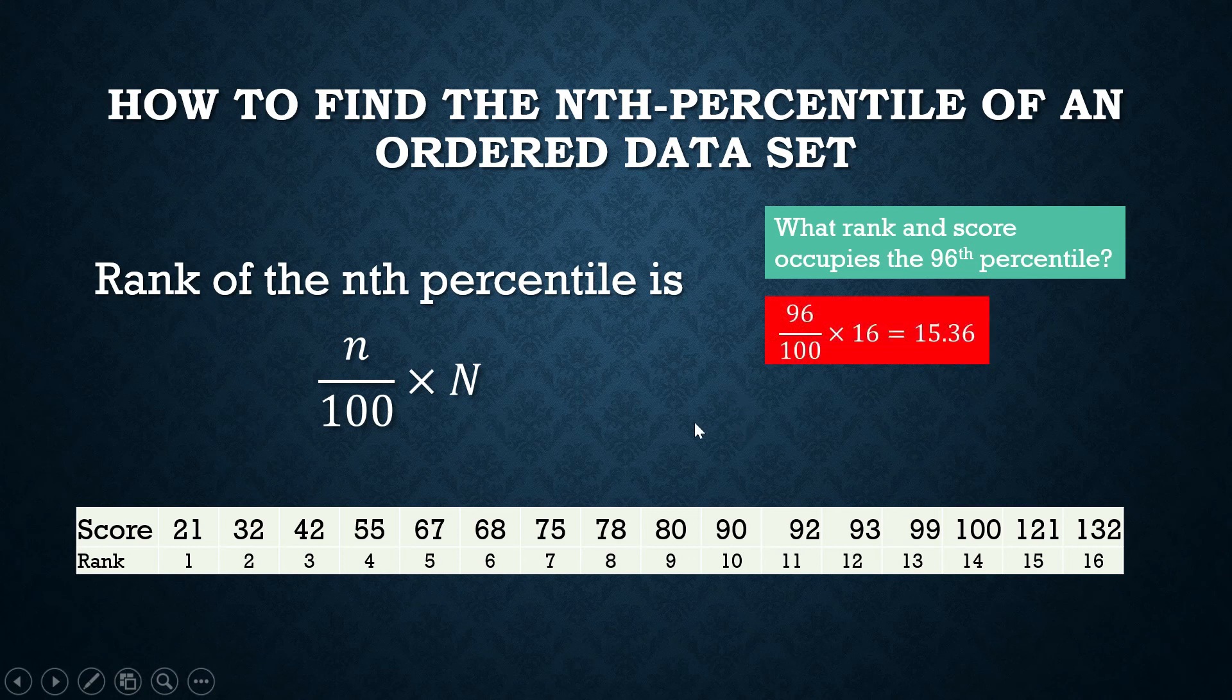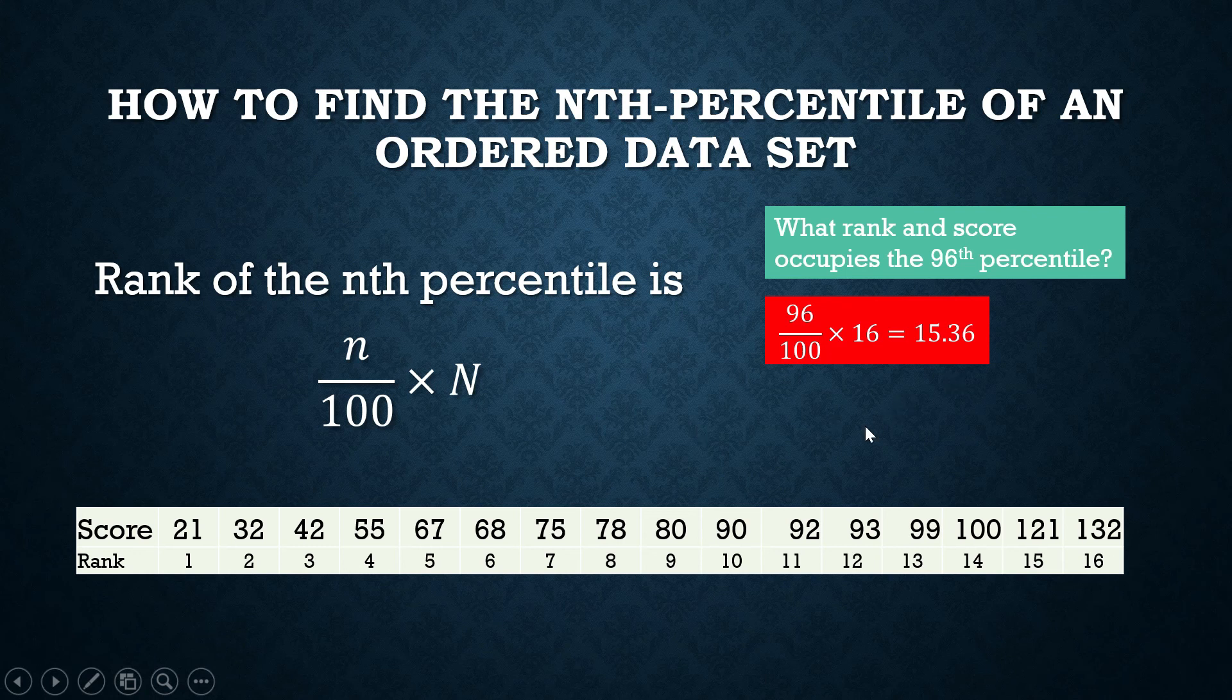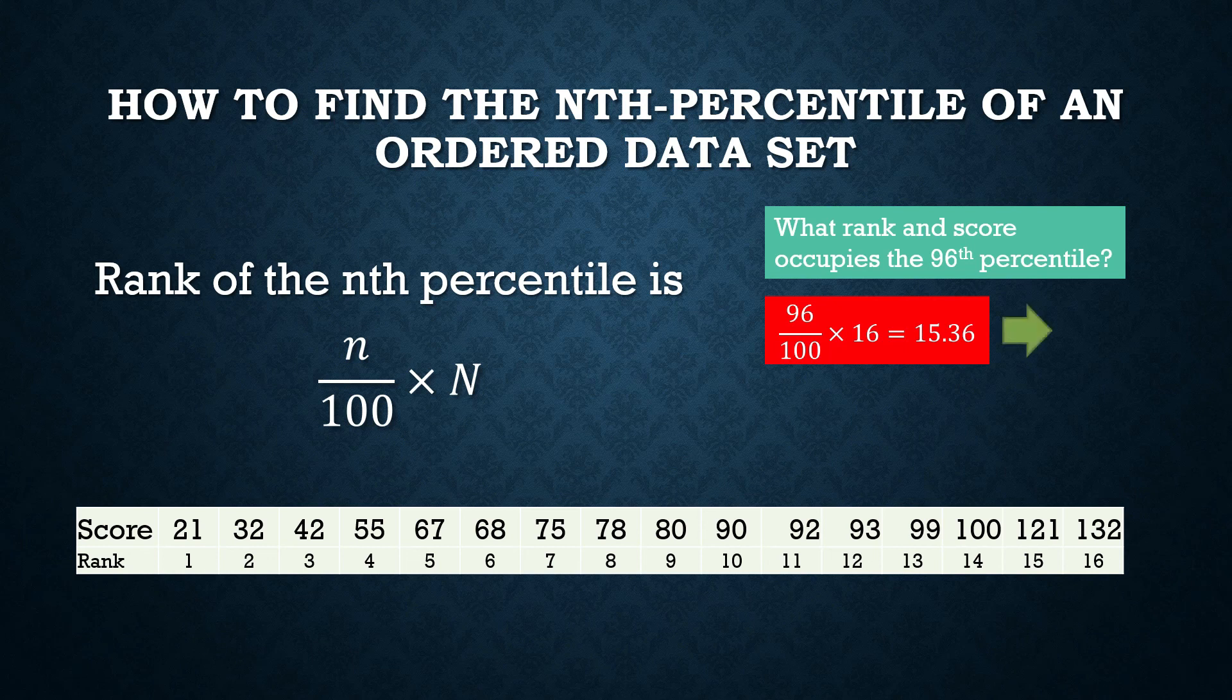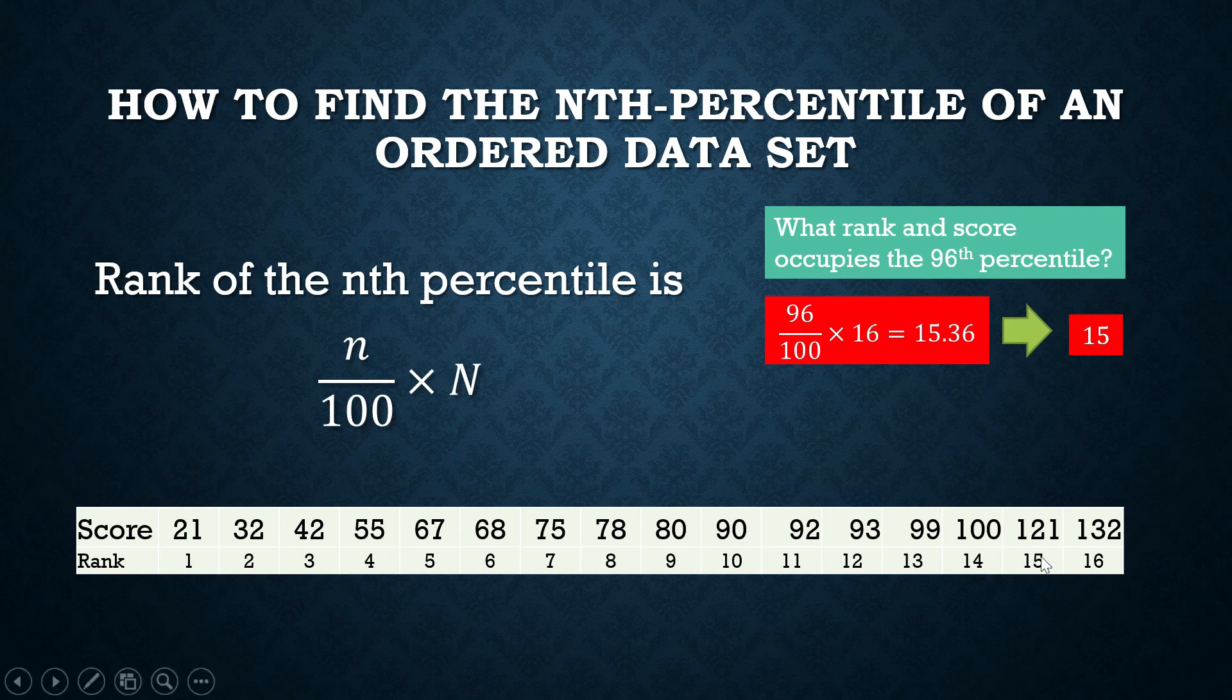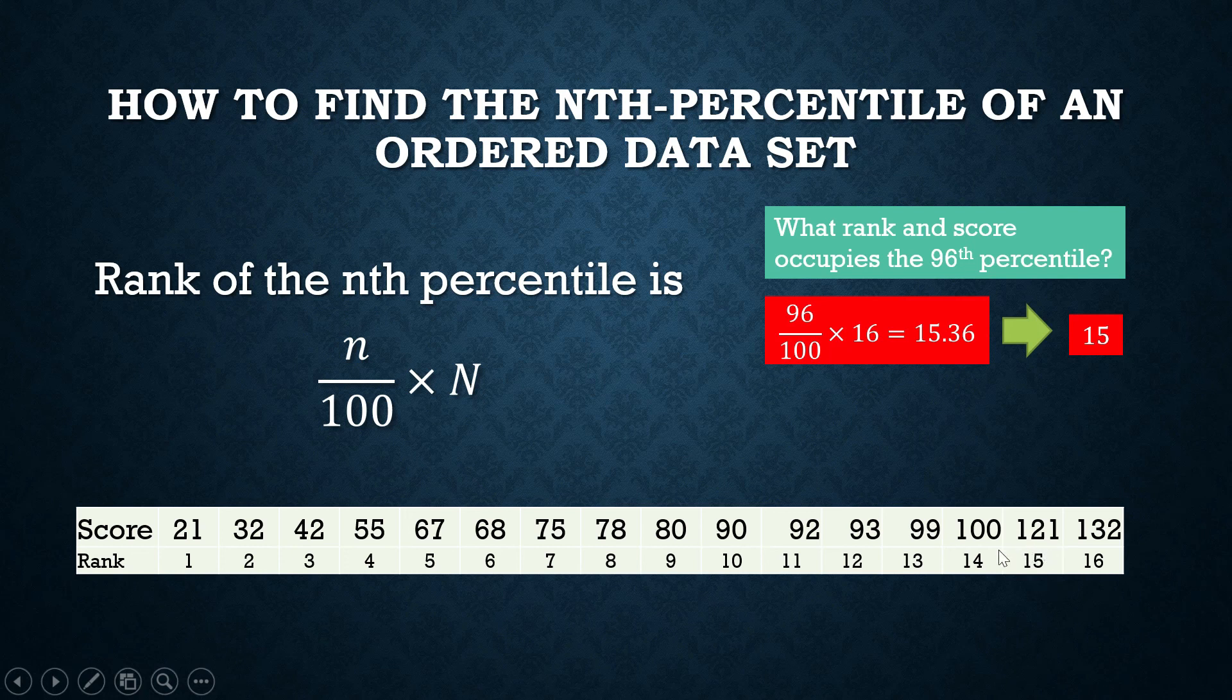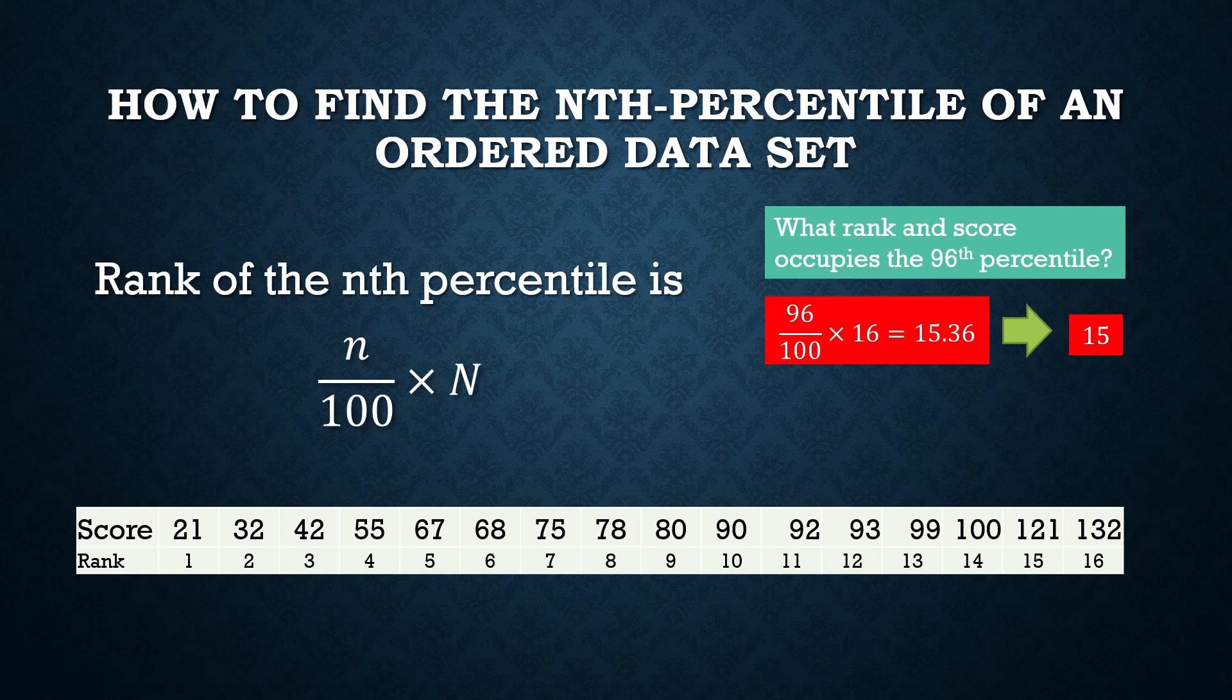96 over 100 times 16 equals 15.36. Rounding it to the nearest integer, it's 15. We will look for the data value that occupies the rank of 15. It's 121. If this is the scores in an examination and your score is 121, the relative position of 121 in relation to the other scores of your classmates in the class is 96th percentile.